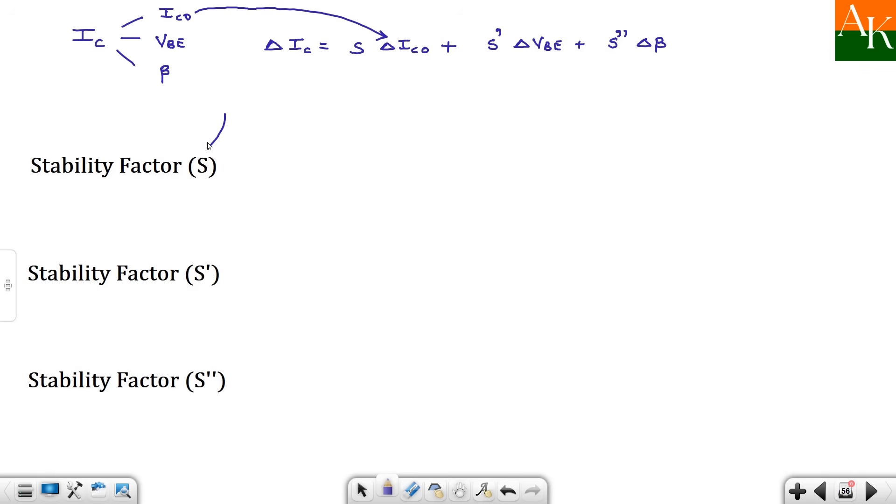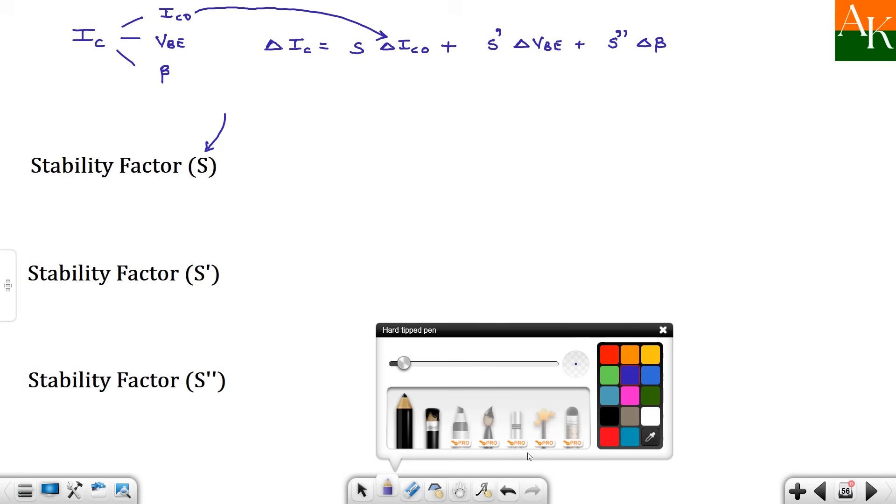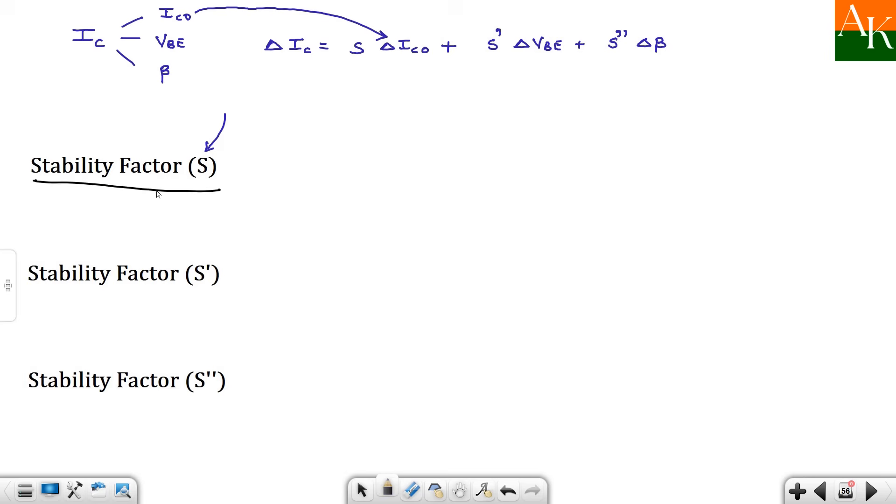How will you calculate stability factor S? Most of the textbooks, they have S's derivation. We will also do the derivation for the expression of S. So S is nothing but delta IC divided by delta ICO.